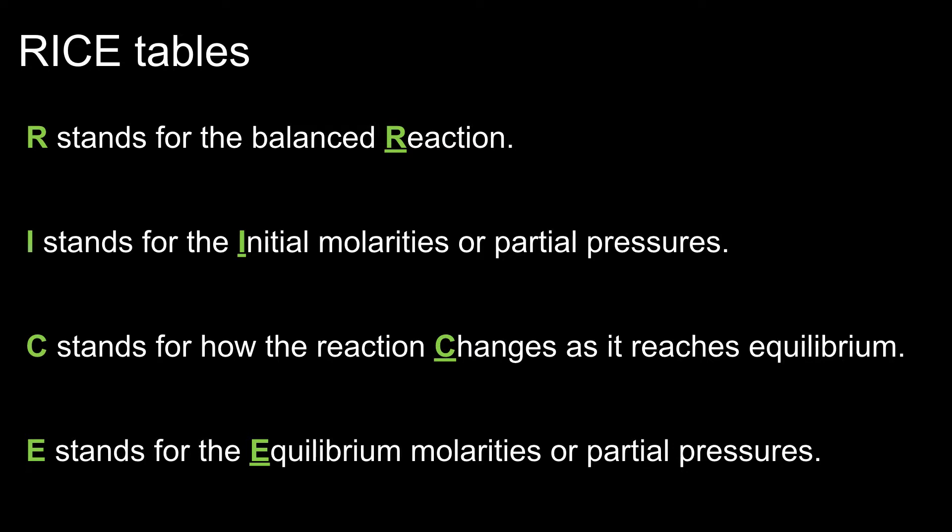R stands for balanced reaction. I stands for the initial molarities or partial pressures. C stands for the reaction changes as it reaches equilibrium. E stands for the equilibrium molarities or partial pressures. Each of these letters represents a row in the table.